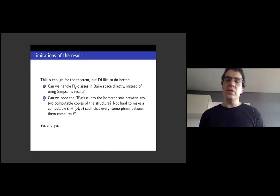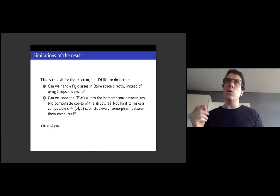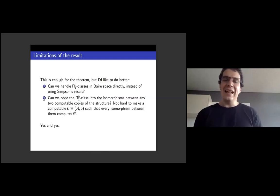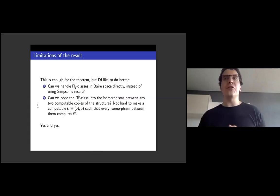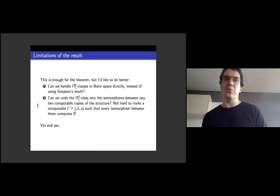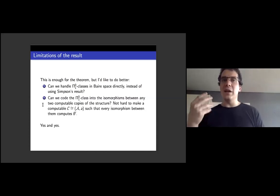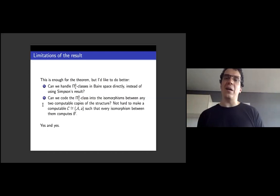That proves what we wanted. But there's a limitation: we built one computable structure and controlled its automorphism group, but it's not hard to build another computable copy with a much worse automorphism group — you can code zero-jump into the non-trivial automorphisms of a computable copy. So can we control the automorphisms of all computable copies of the structure, not just the one we built?